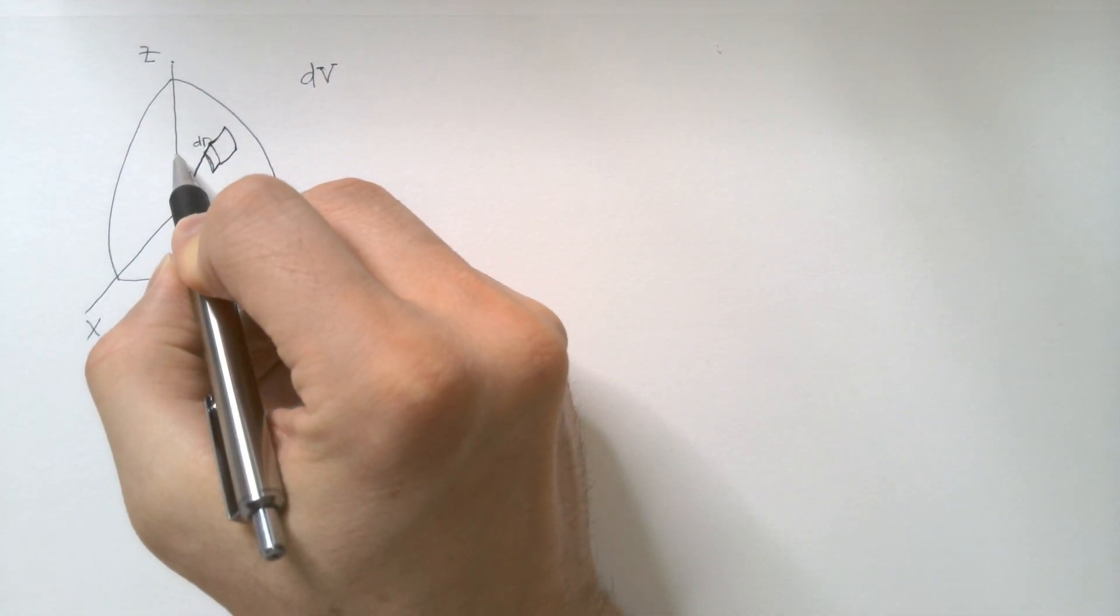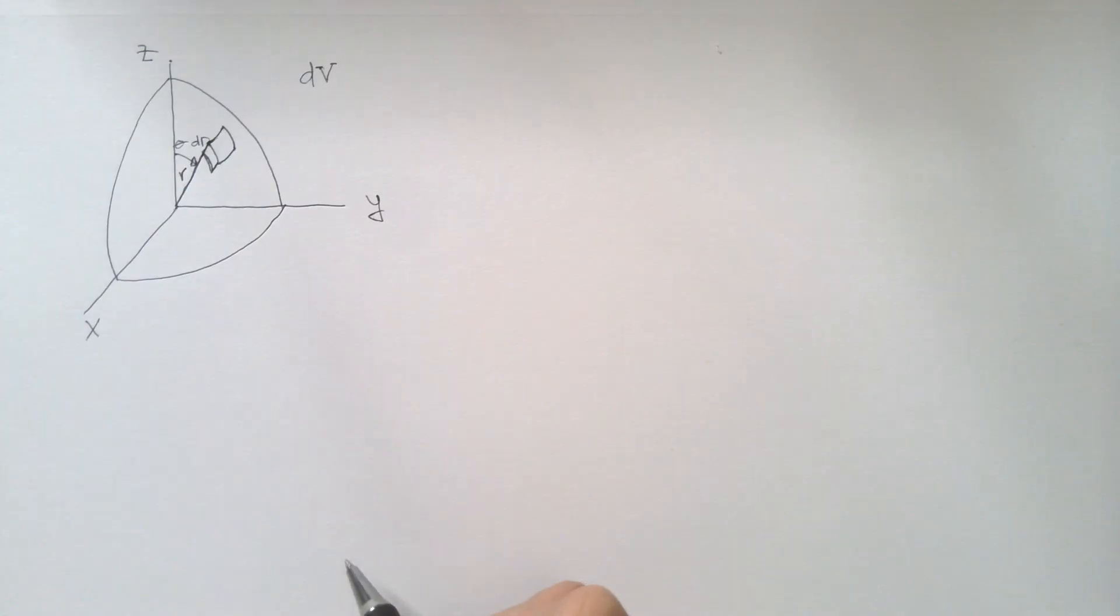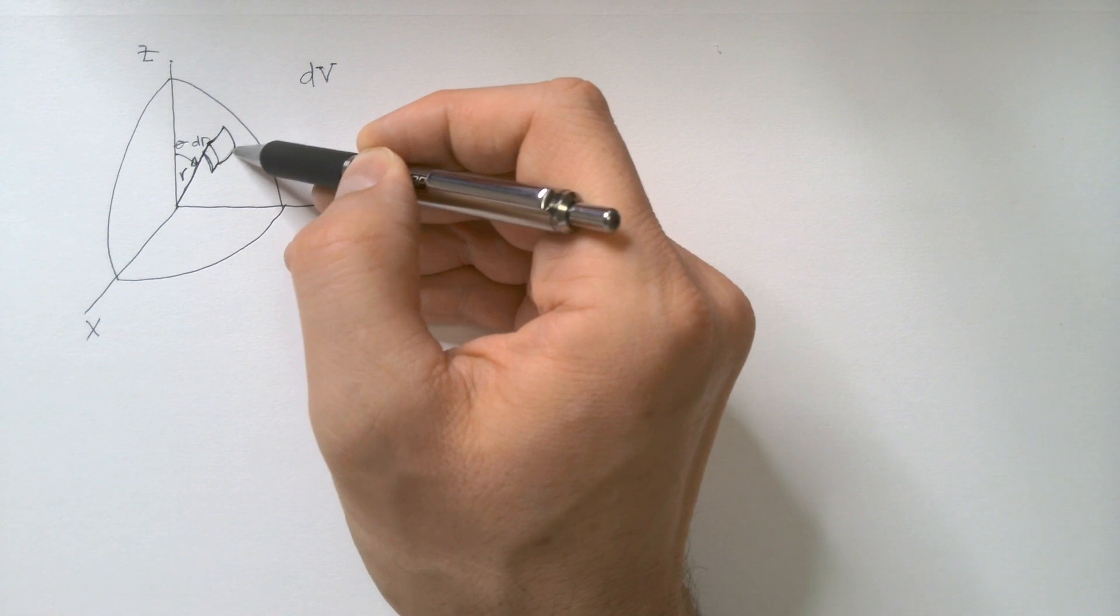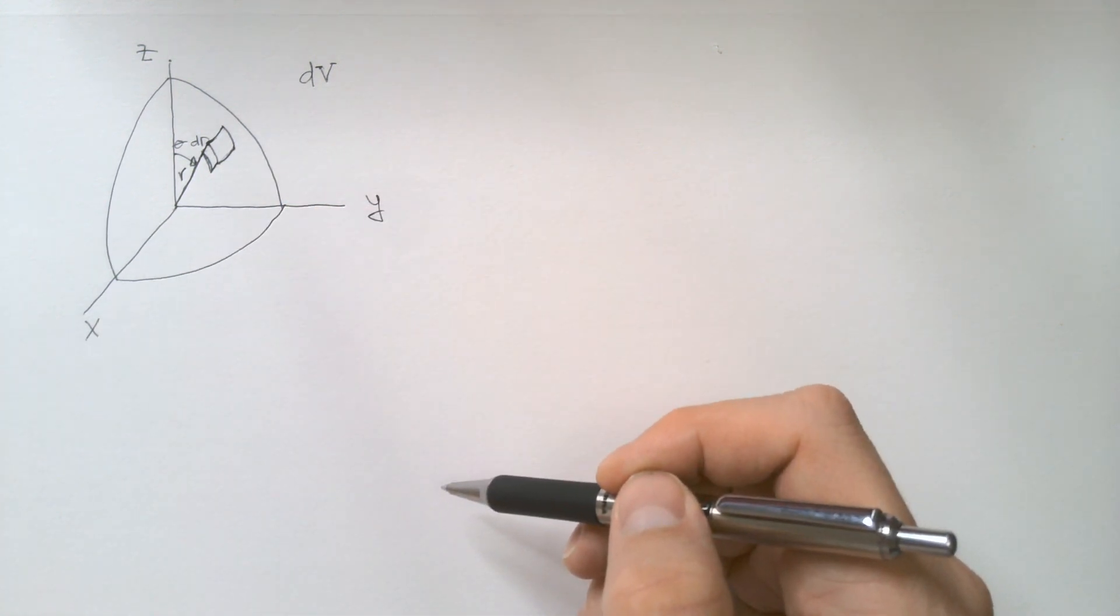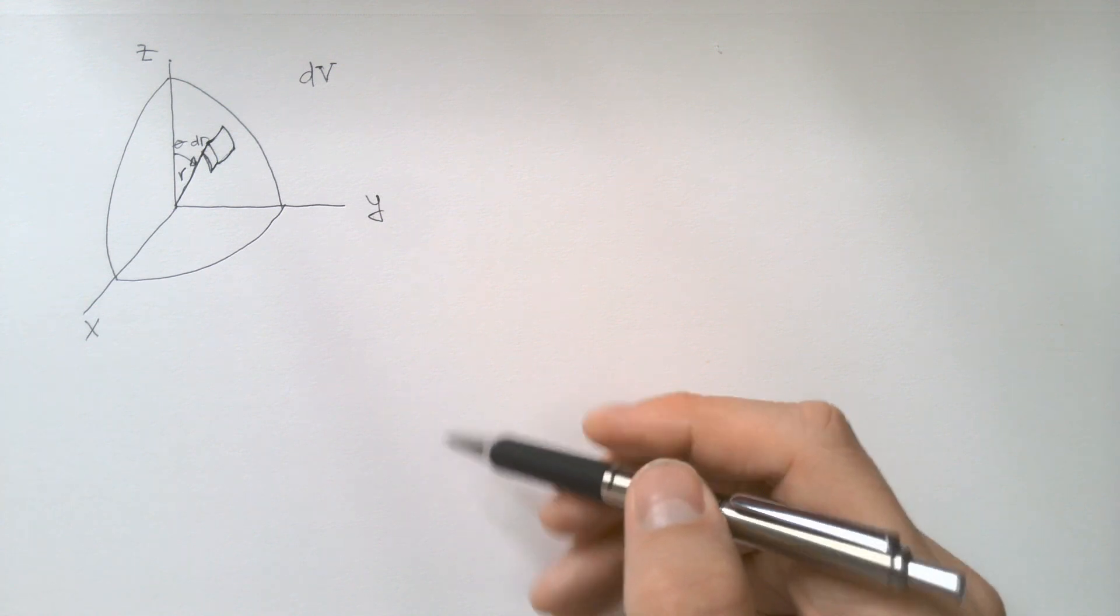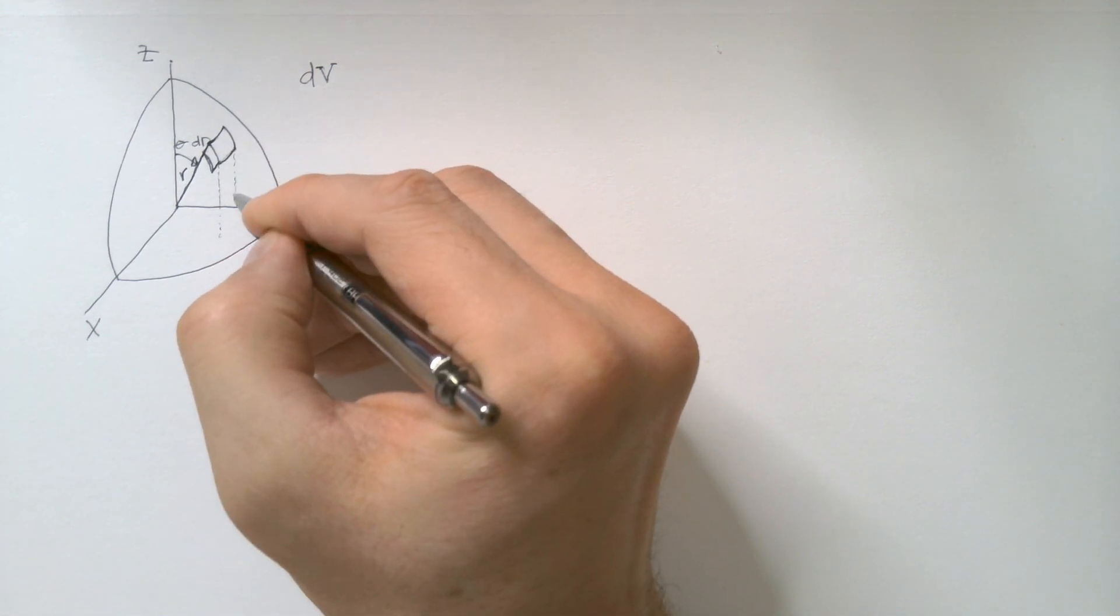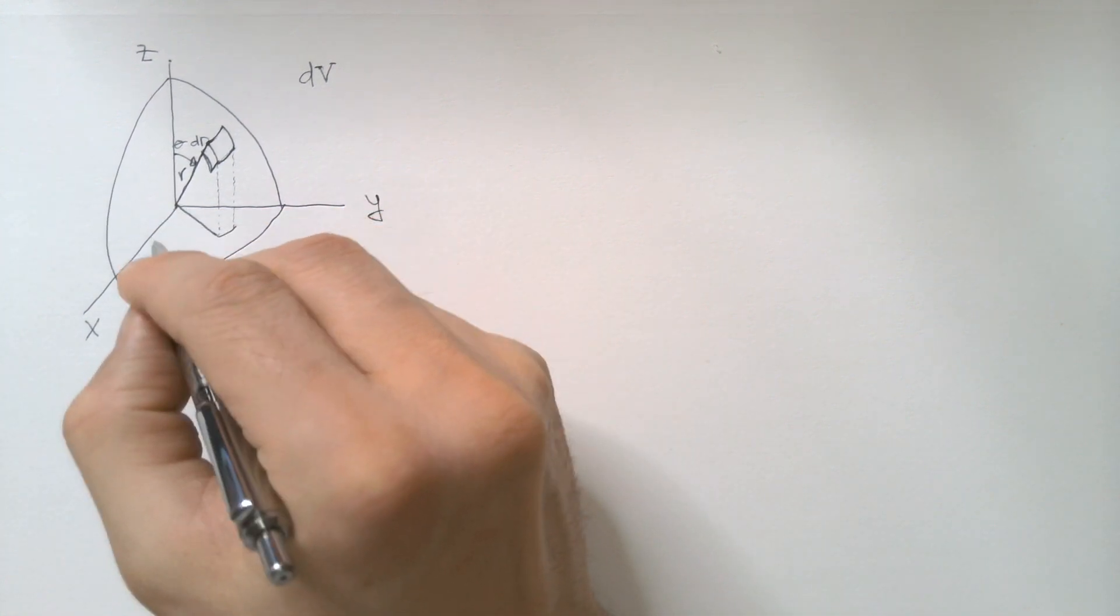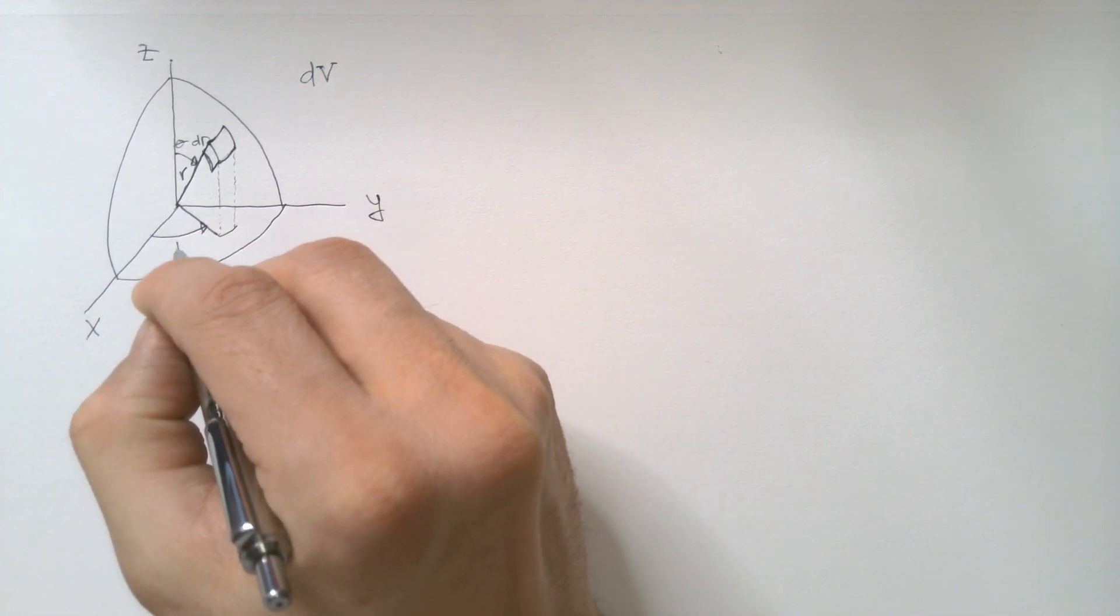Moreover, in spherical coordinates, this angle over here is theta. And the projection of this length onto the x, y plane will be used to determine the azimuth angle phi. Namely, I project this over here and this over here is the azimuth angle phi.